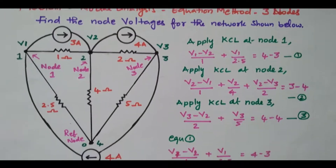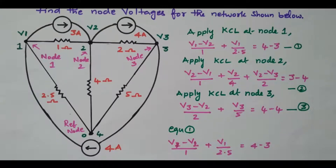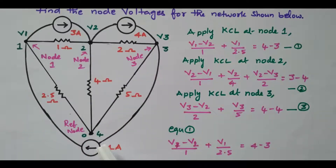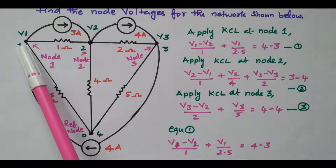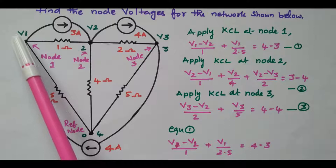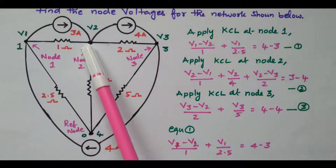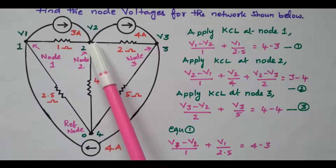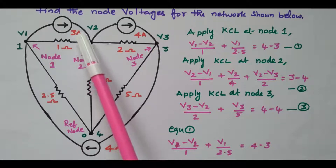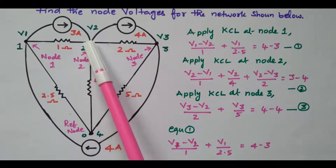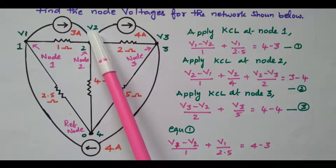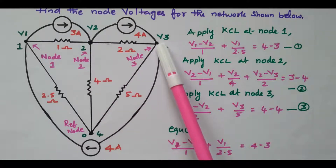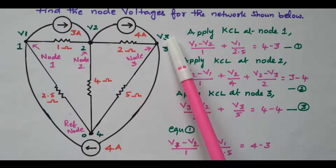The network is available here. There are three current sources available and resistors are connected. By inspecting this diagram, we can easily identify node 1 — the voltage at node 1 is V1. This is node 2; a node is nothing but a junction point where the current sources and resistors are connected together. The voltage at node 2 is V2. This will be the third node, and the voltage at that node is V3.